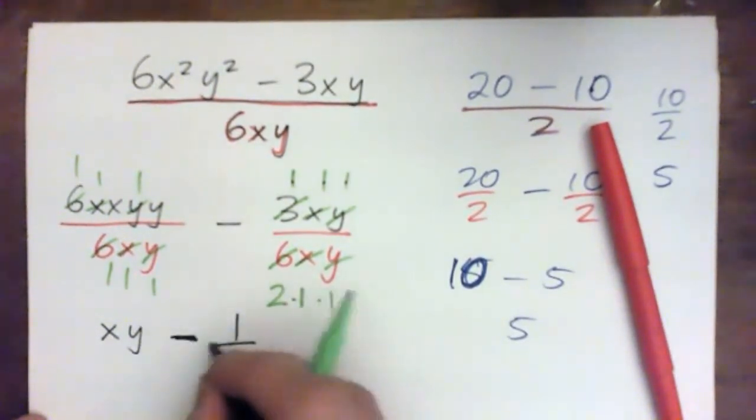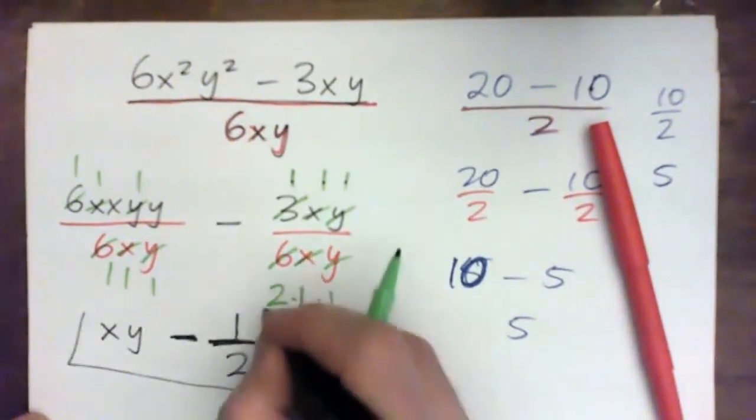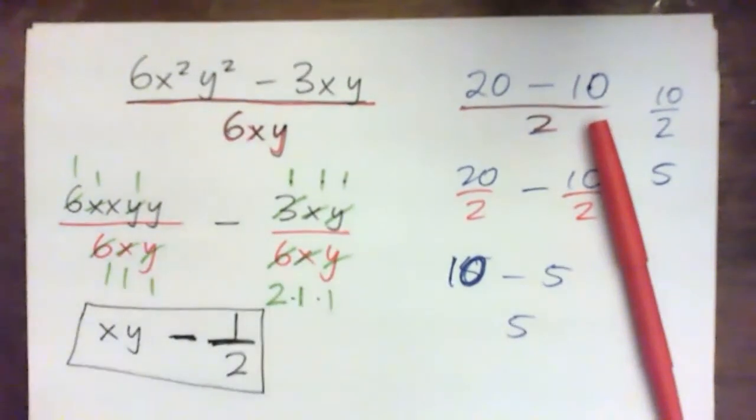And that subtract sign should be in line with the fraction. That make sense? Okay. Let's do it. And then cross-cancel. Yep. That's all. Awesome.